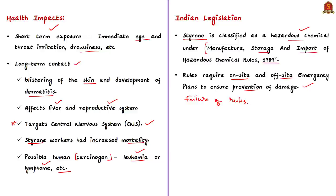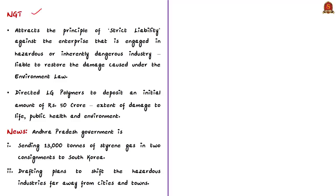Therefore, according to the National Green Tribunal, it attracts the principle of strict liability against the enterprise — that is, LG Polymers — which is engaged in the hazardous substance styrene. Such an entity is liable to restore the damage caused as per the Environment Protection Act of 1986. The NGT also directed LG Polymers India Private Limited to deposit an initial amount of 50 crore rupees for the extent of damage to life, public health and environment.